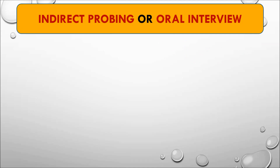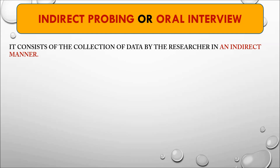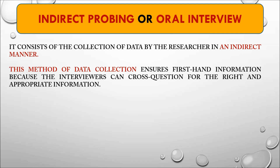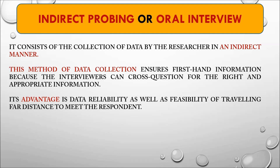The second method is indirect probing or oral interview, which is really important in data collection. It consists of collecting data by the researcher in an indirect manner. This method ensures first-hand information because interviewers can cross-question for the right and appropriate information, ensuring data quality through cross-questioning. The advantages are that data is reliable as well as feasible, because it restricts the need for traveling to far distances.